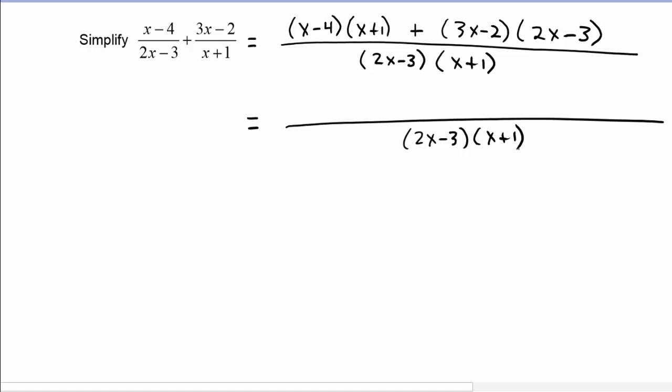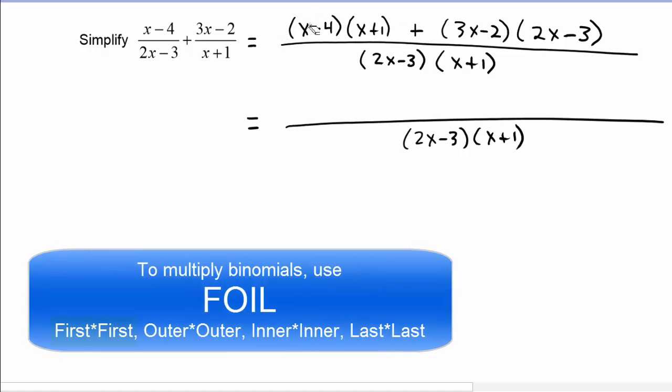The denominator continues on 2x minus 3 times x plus 1. And similar to the previous problem, we have to FOIL out each term. So we have x times x is x squared, x times 1 is x, minus 4 times x is minus 4x, minus 4 times 1 is minus 4. Then we have to add 3x times 2x is 6x squared. We've got 3x times minus 3 is minus 9x, minus 2 times 2x is minus 4x, and minus 2 times minus 3 is plus 6.